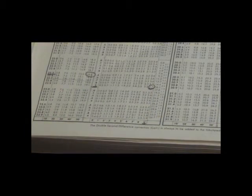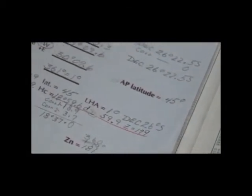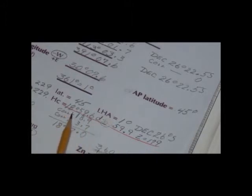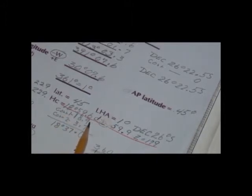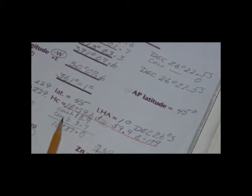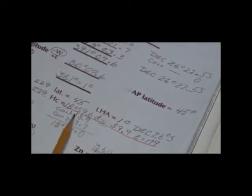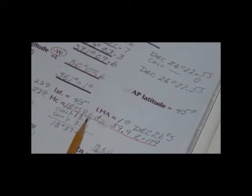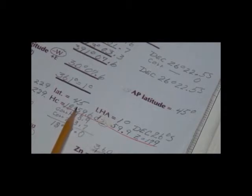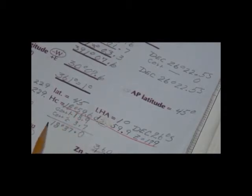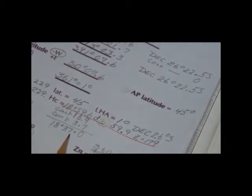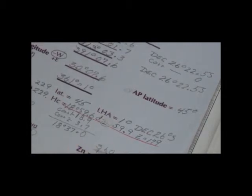So the total correction then, on the sight form, is 18.9 and 3.7. Now these were minus, because this was a minus. So then we subtract these two figures from the computed height, and we get the computed height total of 18 37.0. So that's where the things come from.